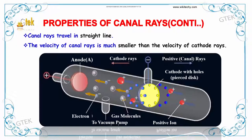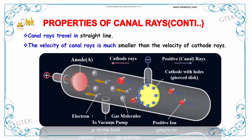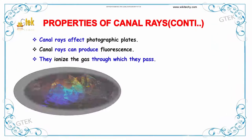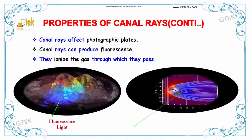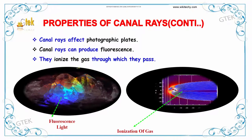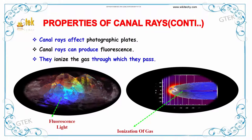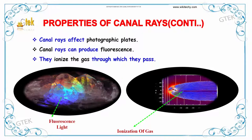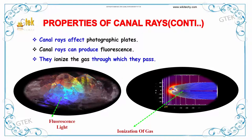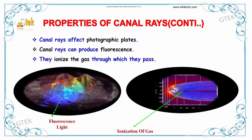It is a vacuum tube, and these are electrons moving towards the anode. Canal rays can affect photographic plates and are able to produce fluorescence. They also ionize the gas through which they pass. These are the advantages and properties of canal rays.